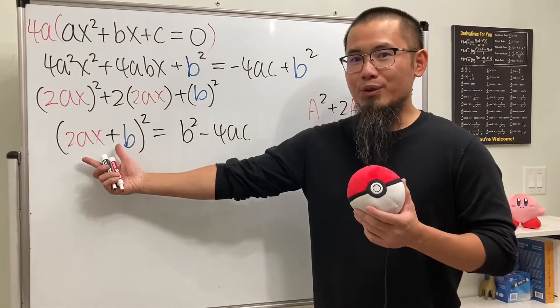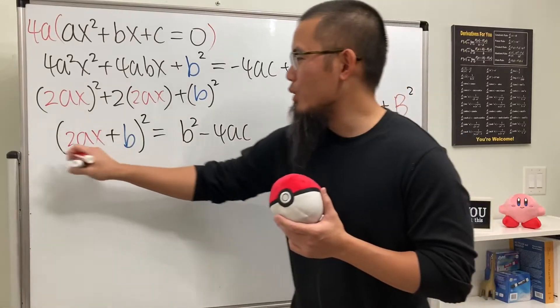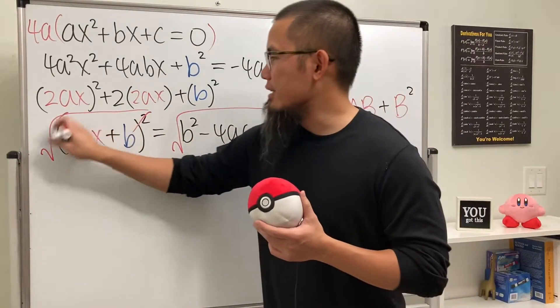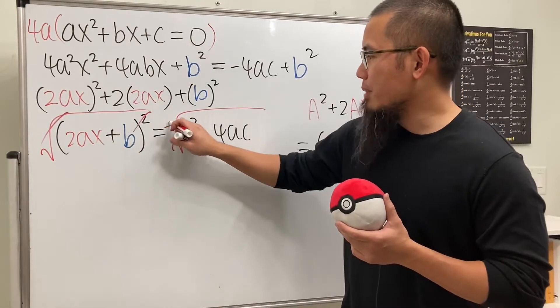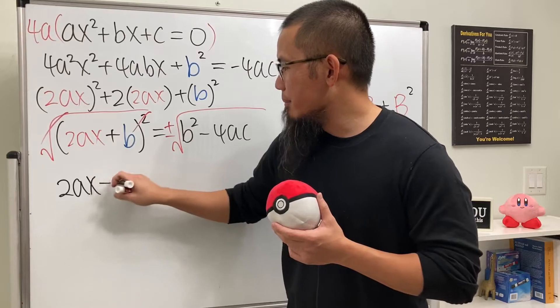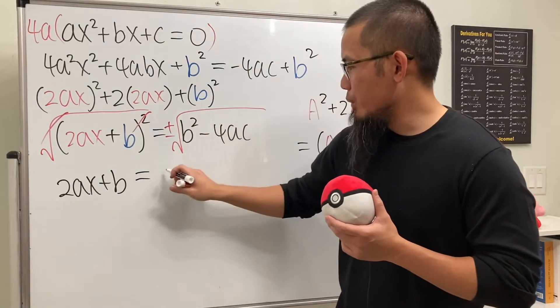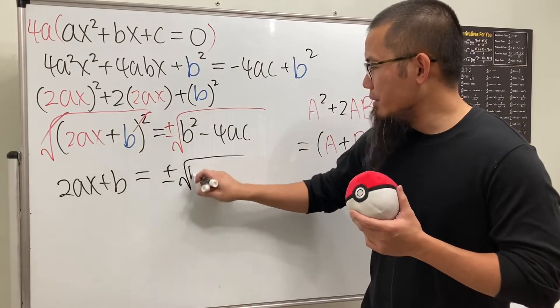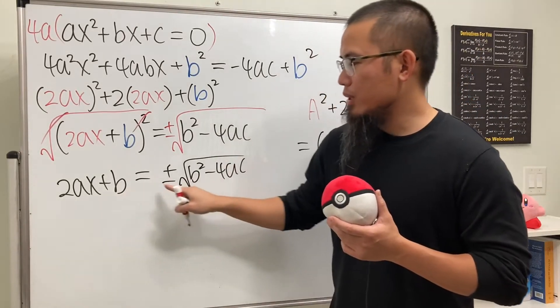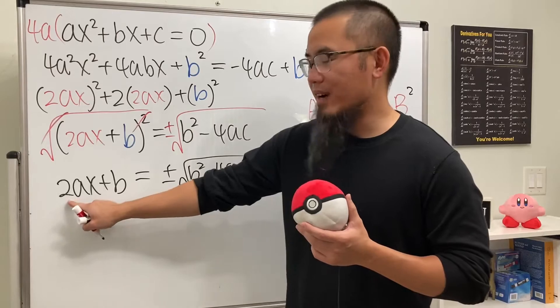And now, we have to isolate the x. We can just take the square root on both sides. Go ahead and do that here, and go ahead and do that here. This and that cancel, and let's just go ahead and put down the plus minus on the right-hand side. And we see this is just 2ax plus b, and that's equal to, here we go, plus minus square root of b² minus 4ac. And now, bring this to the right-hand side, and also divide by 2a after that.